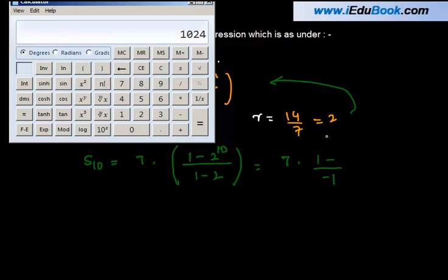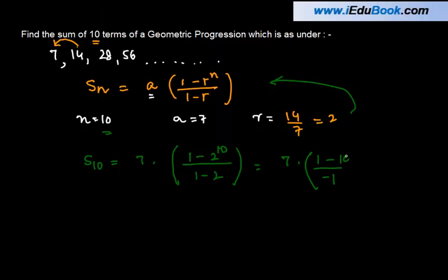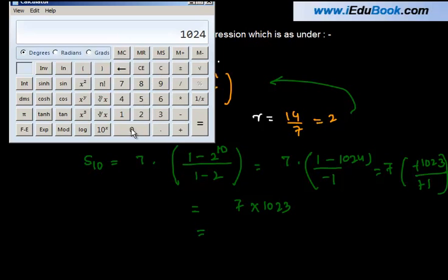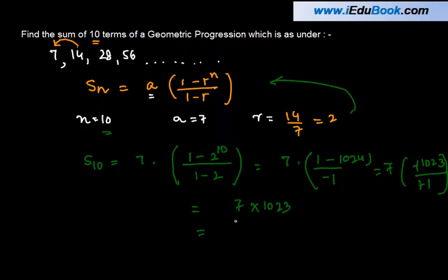So, we get here 1 minus 1024, or 7 times minus 1023 divided by minus 1. Minus minus will give you positive. 7 times 1023, which is equal to how much? Let's go again to the calculator. It's 7 times 1023 is equal to 7161. So, the sum of first 10 terms of a geometric progression whose terms are 7, 14, 28, and 56 is equal to 7161.